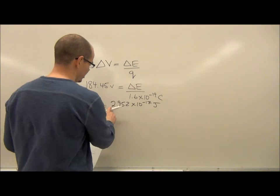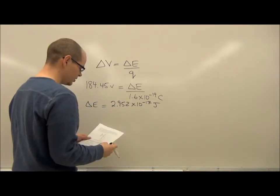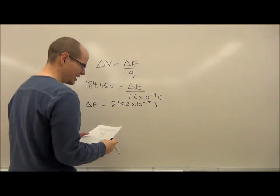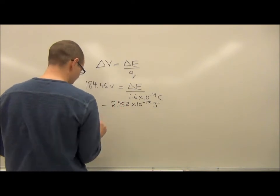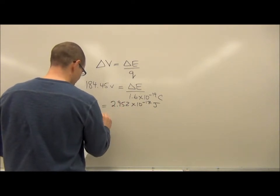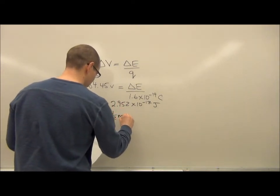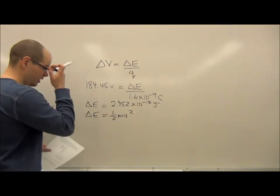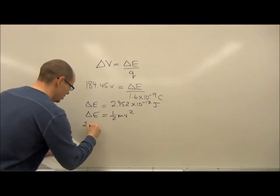That's how much energy it lost as potential and turned into kinetic. So that's the next part of the problem. You need to realize that this change in energy between those plates is a conversion from potential to kinetic. So I'm now going to take this, and I'm going to say that the change in energy is all kinetic. And that lets me find a velocity.